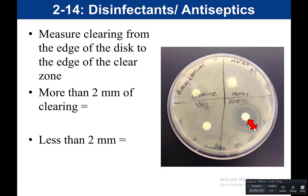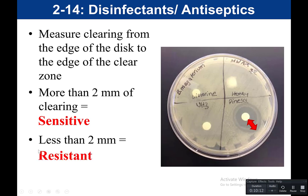If there is more than two millimeters of clearing, meaning a large clear zone, we record that as sensitive. For example, Bacillus megaterium is sensitive to Pine Sol — Pine Sol is effective at inhibiting microbial growth because there's no growth around that disc. If there's less than two millimeters of clearing, we call that resistant. For Listerine, honey, and ammonia, the bacteria grew right up next to the disc, so Bacillus megaterium is resistant to those chemicals.